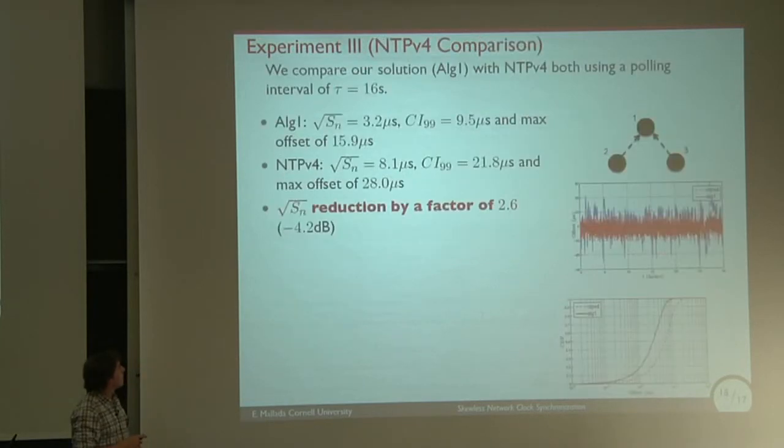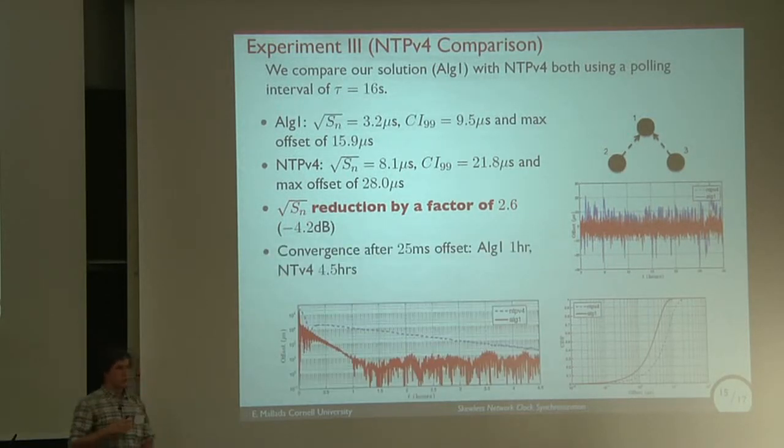We can compare the performance of our algorithm with NTPV4. We get a reduction in the variance of a factor of 2.6. Here you can see the CDF of the offset samples. Our algorithm in red performs much better than NTPV4. Our algorithm can converge much faster. If you start with both protocols synchronizing and add a steep change of 25 milliseconds to the leader, NTP takes up to four and a half hours to reach the same position that our algorithm reached in one hour. The key is that NTP, since it makes offset corrections, cannot update that fast as we can do by making skew corrections.